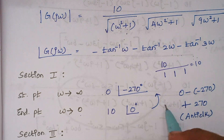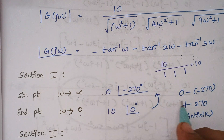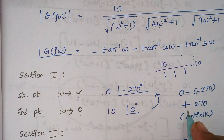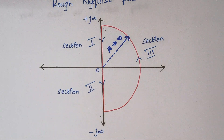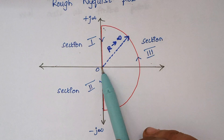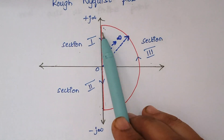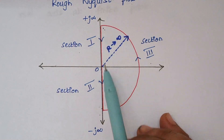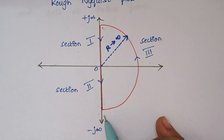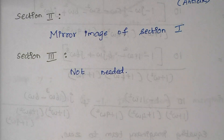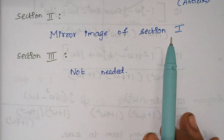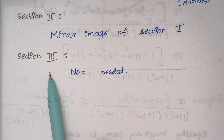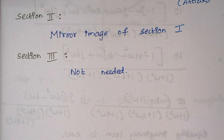Now we calculate the angle of rotation: 0 minus (−270) = +270 degrees. The plus sign indicates rotation in the anticlockwise direction. For section 2, it is nothing but the mirror image of section 1 — section 1 starts at infinity and ends at 0, whereas section 2 starts at 0 and ends at minus infinity. Section 3 is not needed, as the limits are plus infinity and minus infinity.